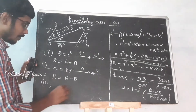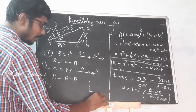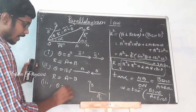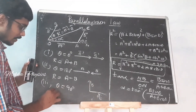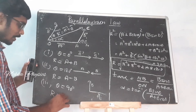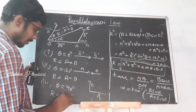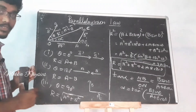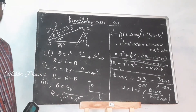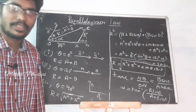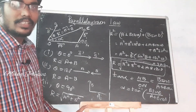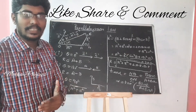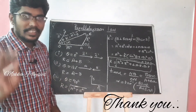Finally, case three: two vectors are perpendicular — this is A vector and this is B vector — then theta = 90. Since cos 90 = 0, the resultant becomes R = √(A² + B²). You have to write these three special cases along with the question — that is very important. Thank you very much.